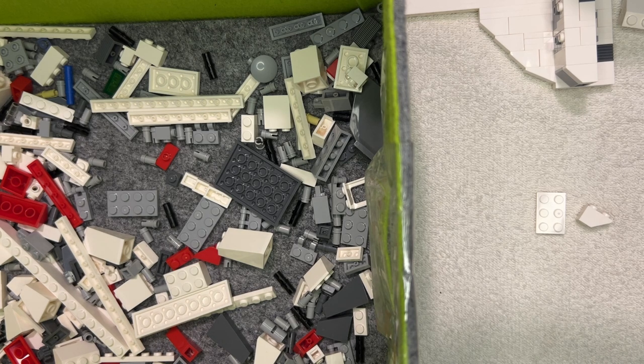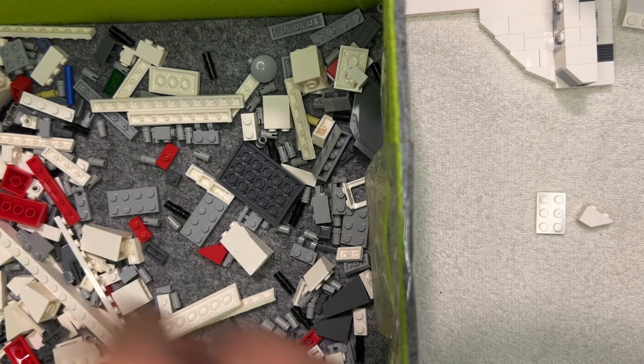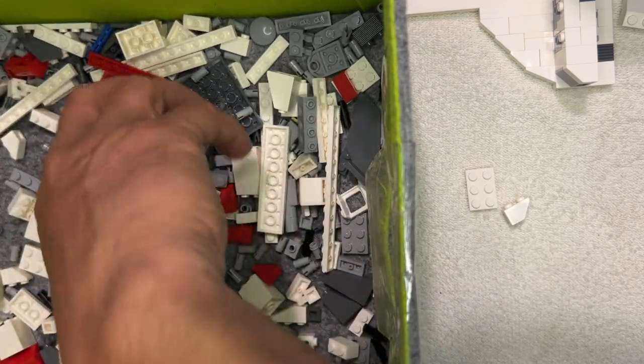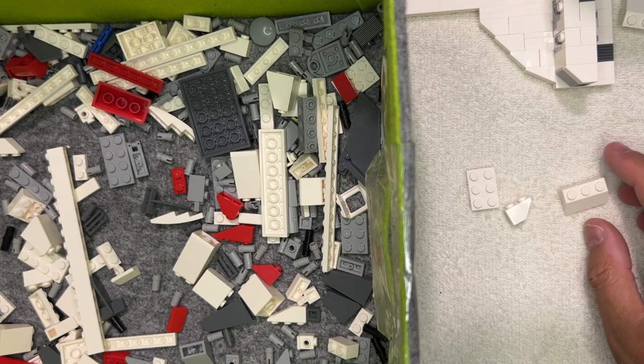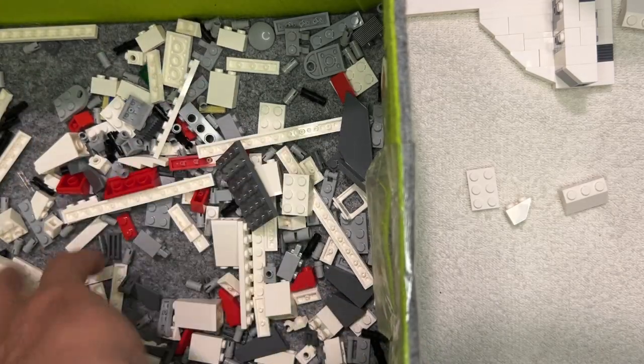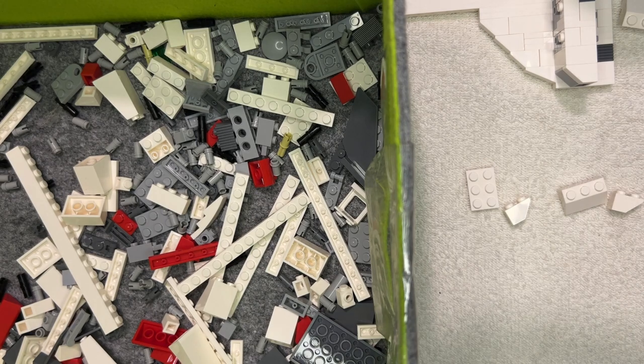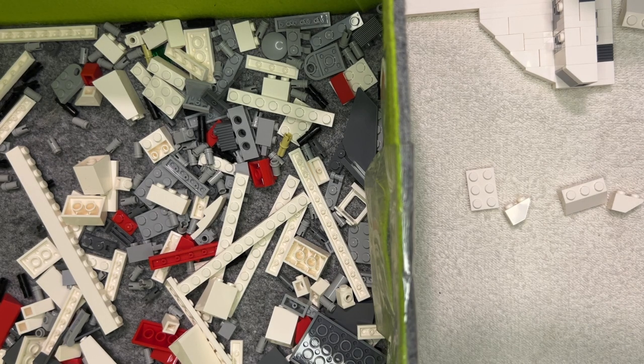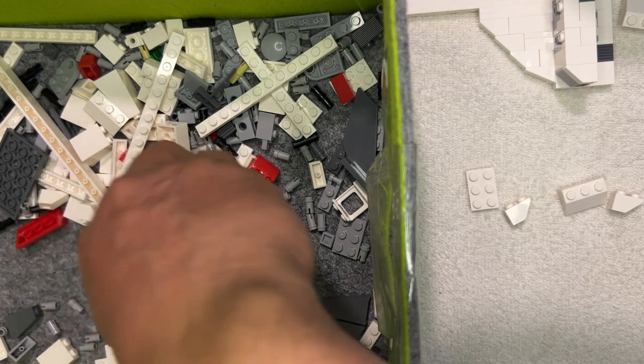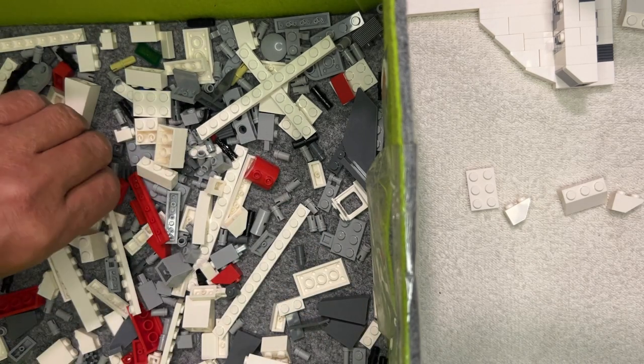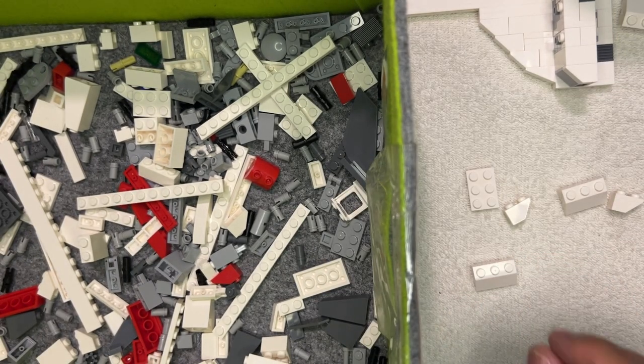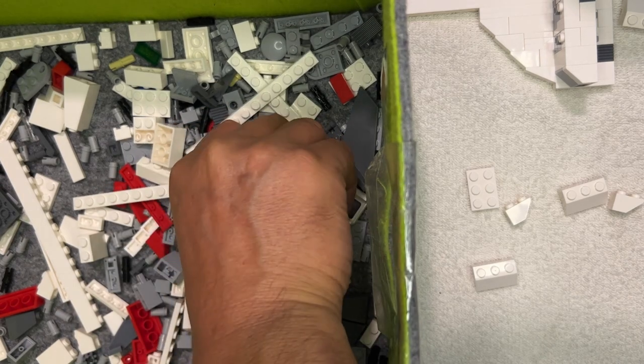Alright, I need that and that. I need this. Nope, that's not right. I need this. I need one of these. One of these upside down slanted deals. Yes, okay. And then one more of those. And then I need a one by two cheese slope.